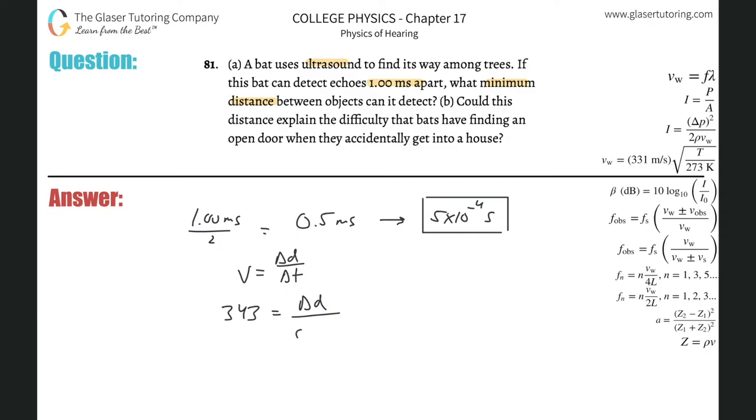So I can then find for delta D, I got to take this delta T value and then just cross multiply it. So we realize that the delta D here is going to be 343 times 5 times 10 to the minus fourth. And this is about 0.172 meters, so about a fifth of a meter.